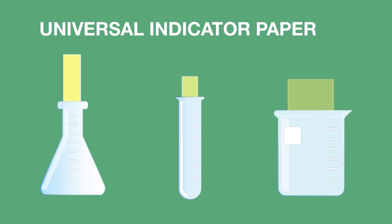Universal indicator paper works in exactly the same manner. Litmus is another indicator commonly found absorbed onto paper as litmus paper.